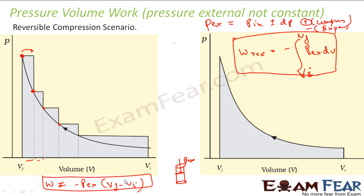This is the general formula for both compression and expansion. Because P_external is changing, instead of using P_ext·ΔV I use P_ext·dV and integrate it from V_initial to V_final.